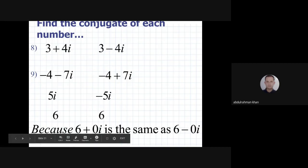For 6, which is a real number, the conjugate is 6. Because 6 plus 0i is the same as 6 minus 0i. The answer is 6.